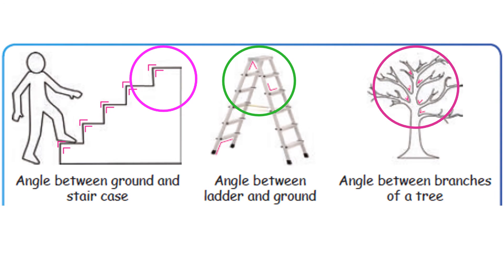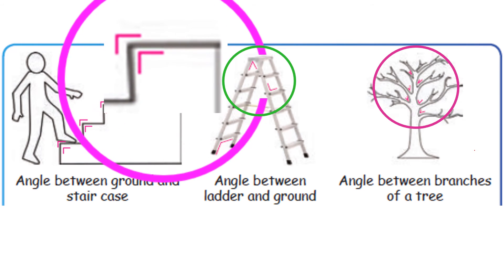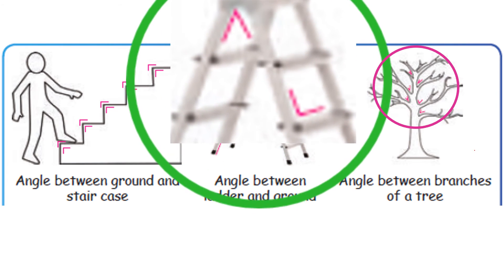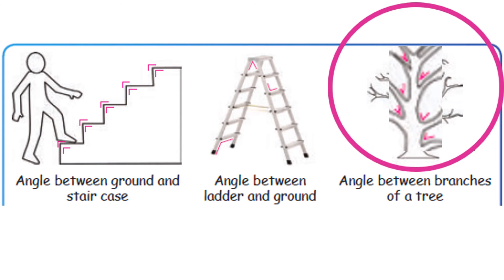Now we are going to see angles in structures — like our steps, our tree, this ladder. This is the angle — a right angle. Here also there is an angle. So many angles are there in this ladder. Between the branches of a tree you can also see angles.